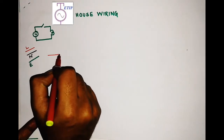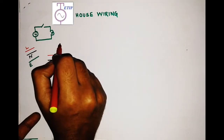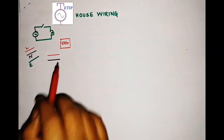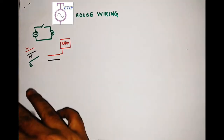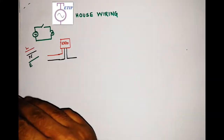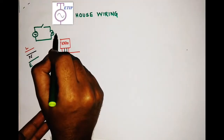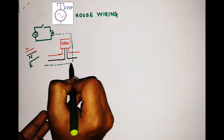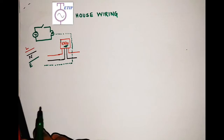The supply authority will give your house one line terminal and one neutral terminal. First, there will be your energy meter — a kilowatt-hour meter — which measures the electricity consumed by you. The two terminals are connected here, and from here you get two more terminals. Up to this point is the supply authority's scope; this point will be sealed and you will not be able to access it. Supply authority personnel will come and take their reading and charge you accordingly.